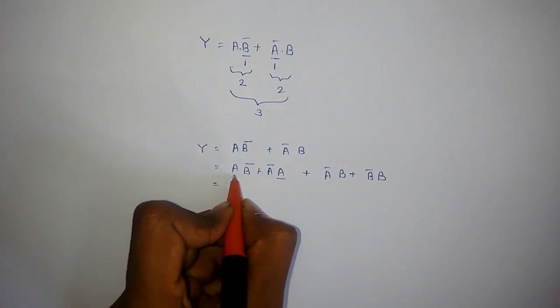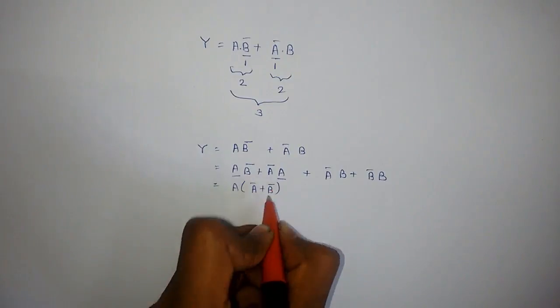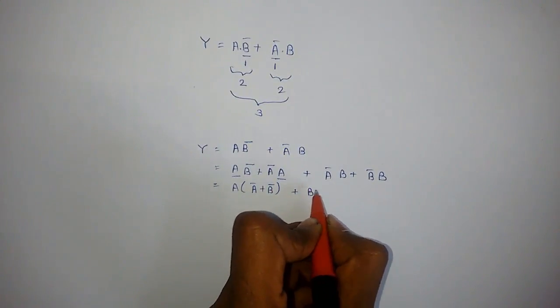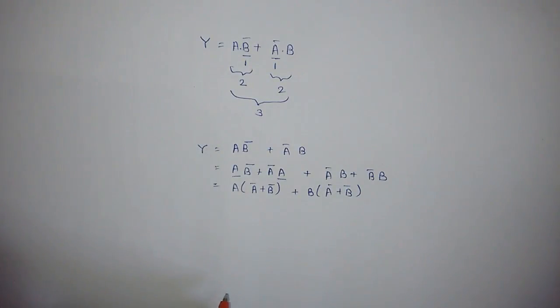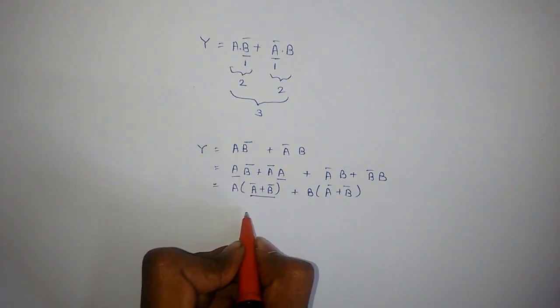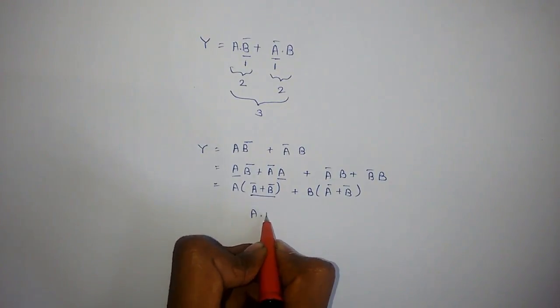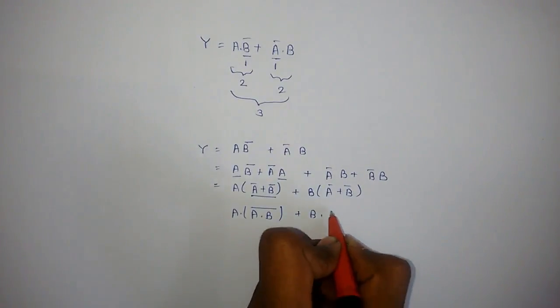Now we will take A common. So we will get A into B-bar plus B-bar, plus B into A-bar plus B-bar. Now we will convert A-bar plus B-bar into A dot B complement. Similarly, B dot A dot B complement.